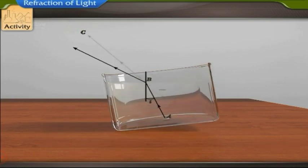When the jar is tilted, the ray AB is incident at a higher angle of incidence on the interface and gets deviated more from the normal and travels along path BD. The coin appears to rise further.